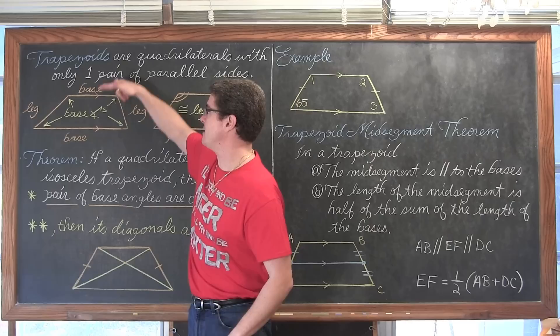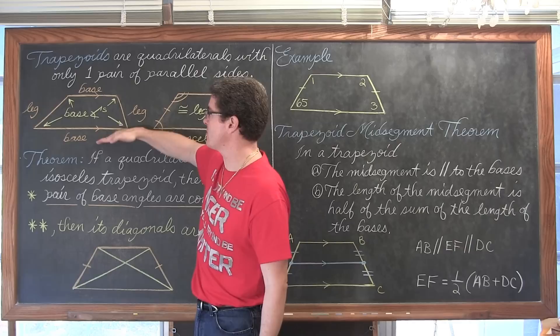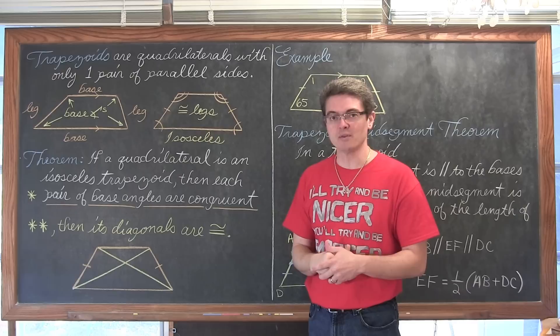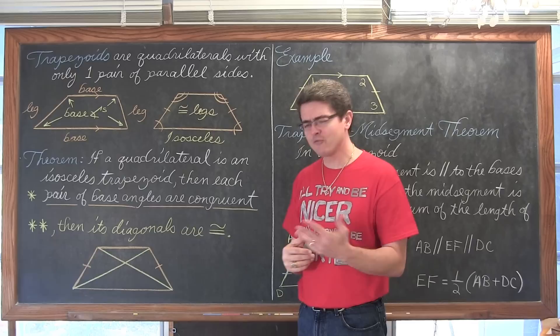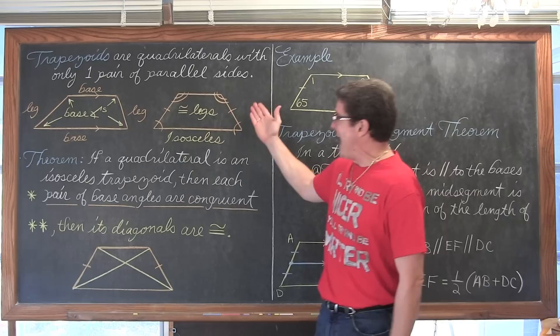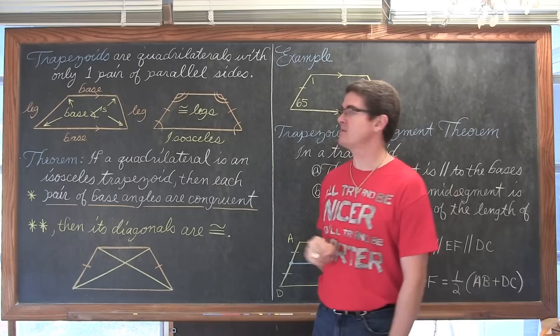Every angle inside of a trapezoid is going to be considered a base angle because they are all against one of the bases. Our examples are mainly going to be focused around the isosceles trapezoid, which is like a triangle. An isosceles trapezoid has the legs which are congruent, just as an isosceles triangle has two congruent sides.